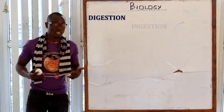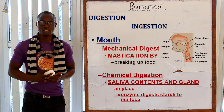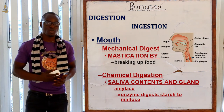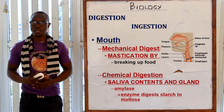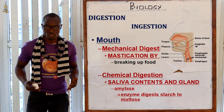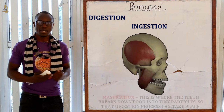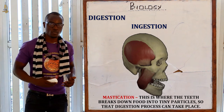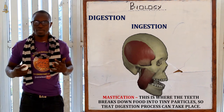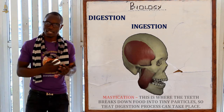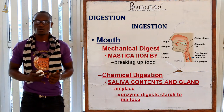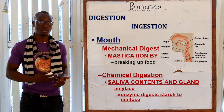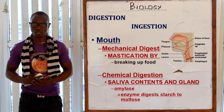Let's begin with ingestion. In the mouth we have two types of digestion: the first is mechanical digestion and the second is chemical digestion. In mechanical digestion, the teeth mechanically break down food into tiny particles that can be acted on by the digestive enzymes. This process by which food is broken down into particles that can be digested by enzymes is called mastication.